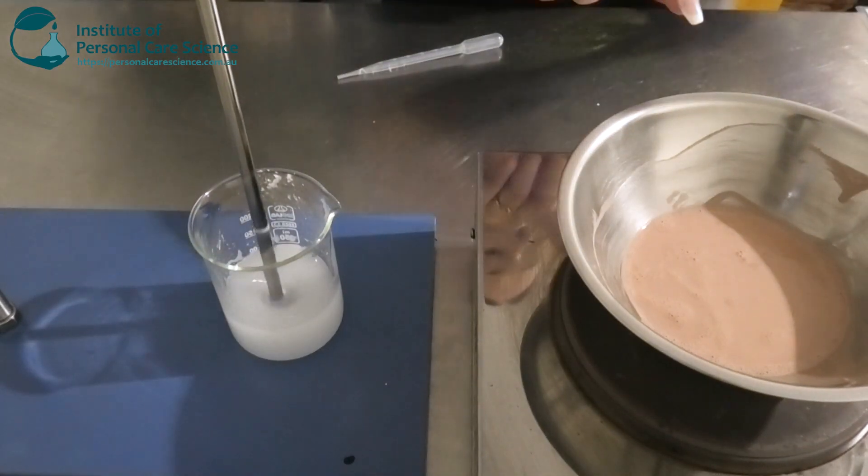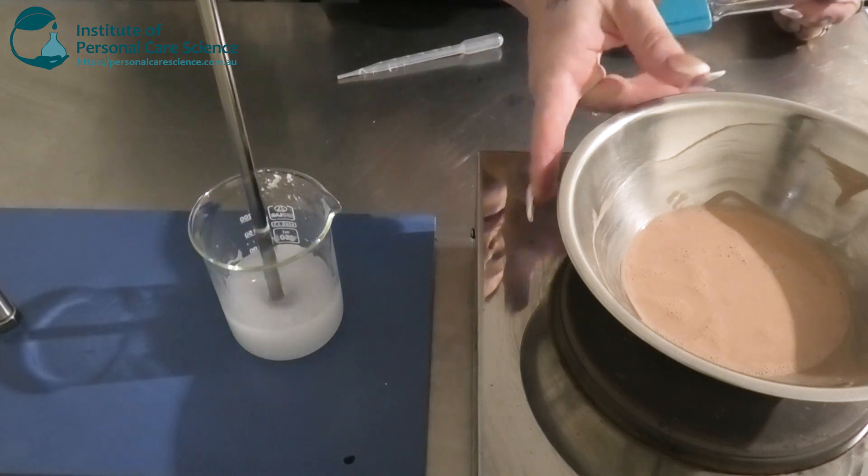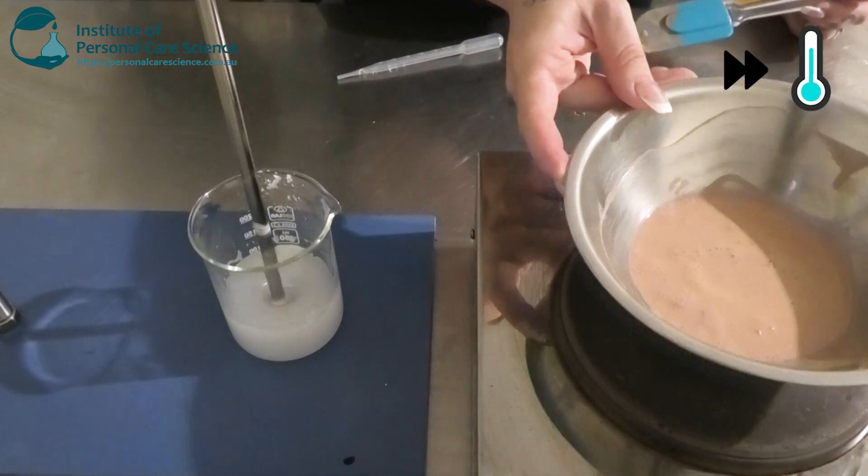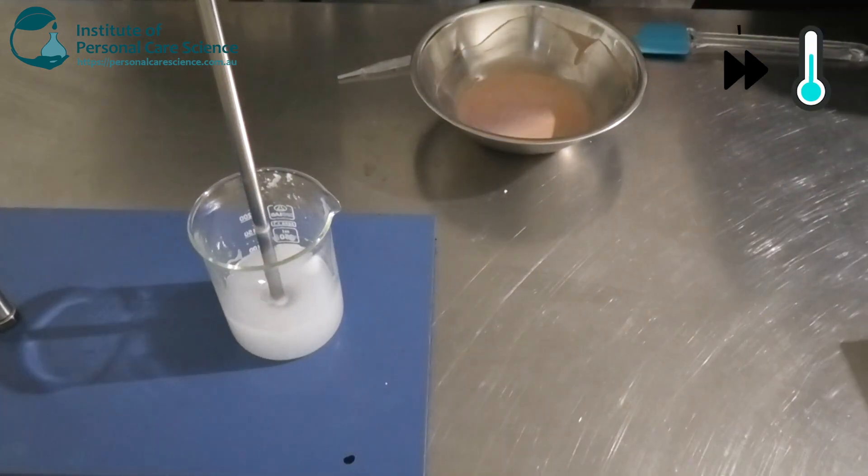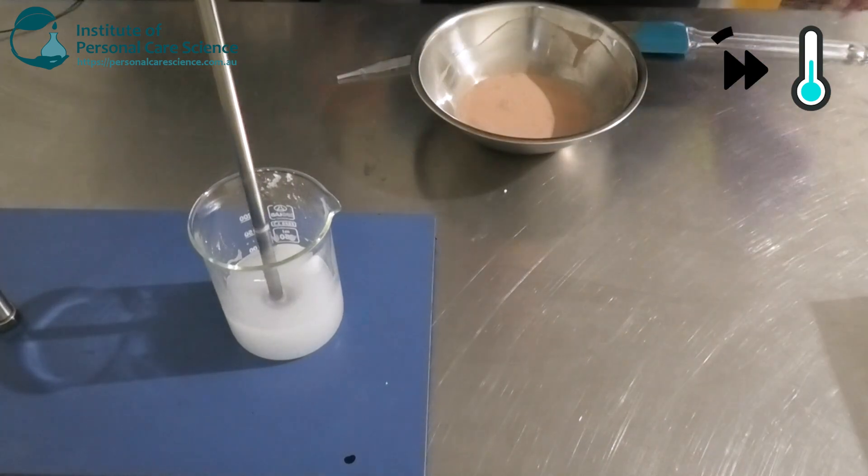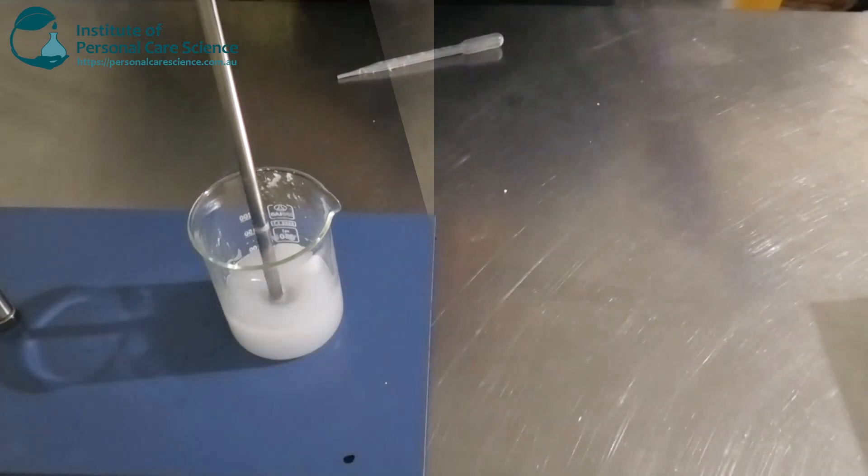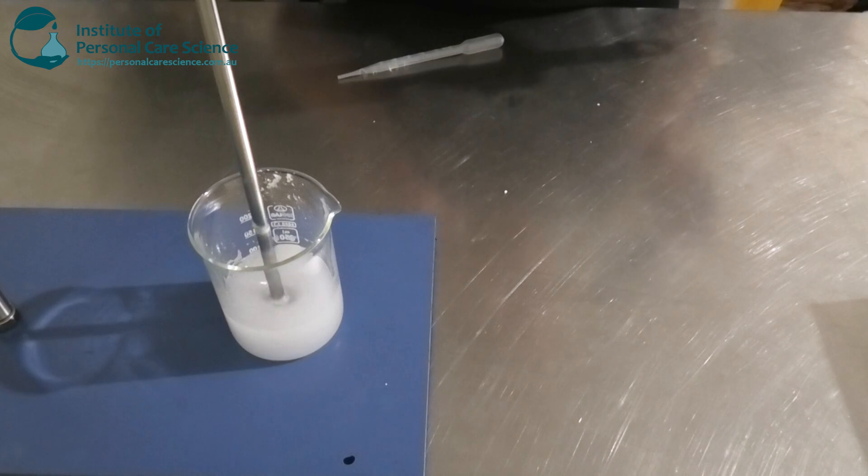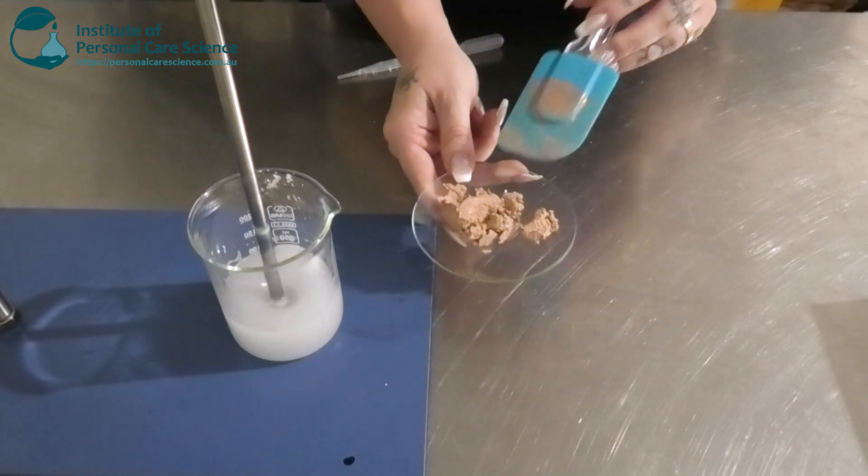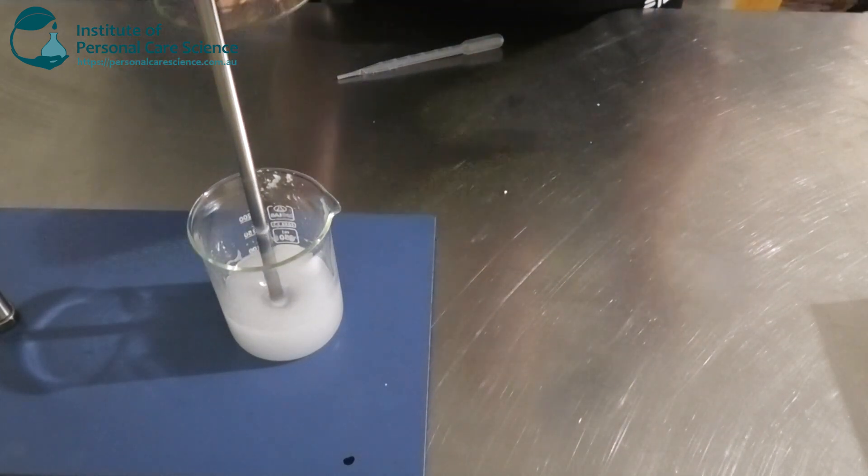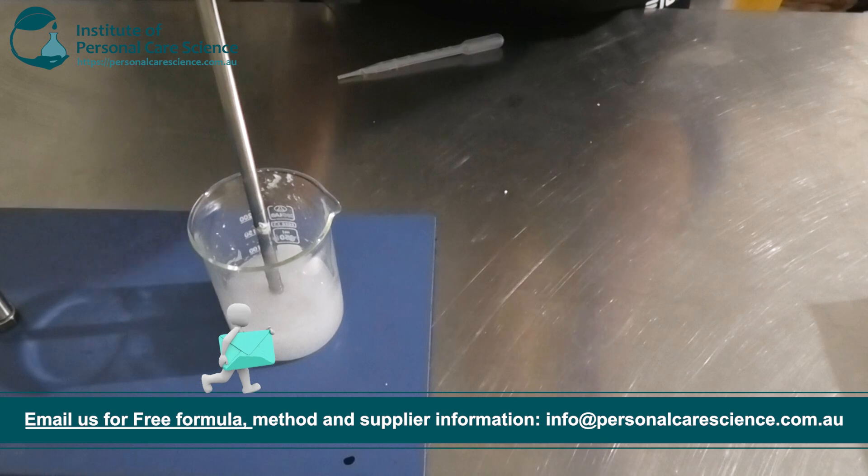So once your oil phase is nice and homogenous, we're going to remove that one from the heat and allow it to cool and set. So once our oil phase or our color phase is nice and set, we're going to add this into our gel network.